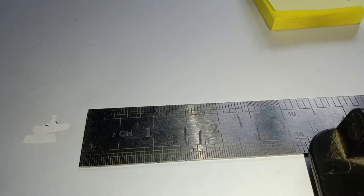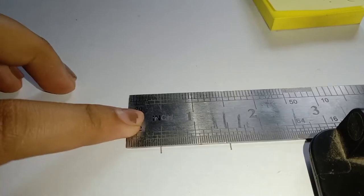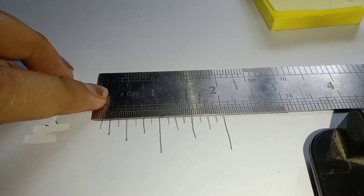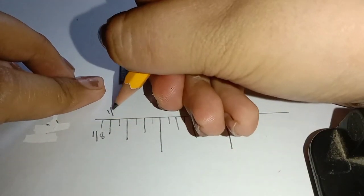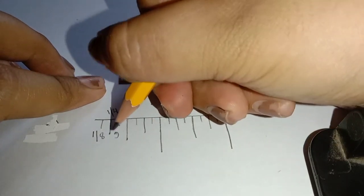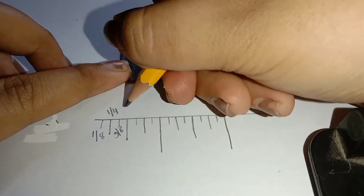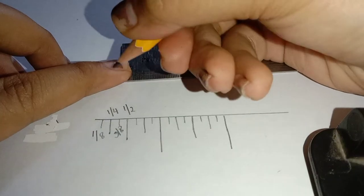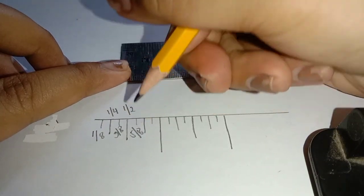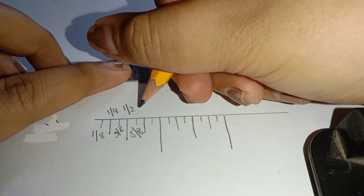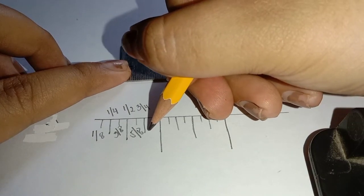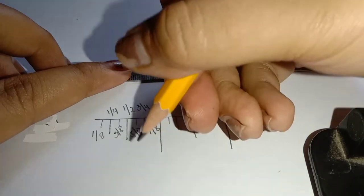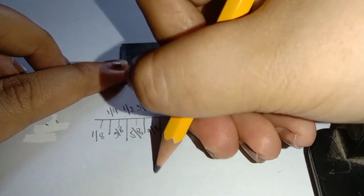This is how to use the steel rule. For example, this is 1/8, 1/4, 3/8, and 1/2. This is 5/8, and this is 3/4, 1/5, 5/16, 7/8, and the longest is an inch increment. So, this is 1 inch.